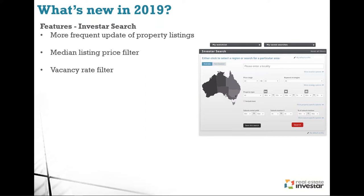Vacancy rate is a really exciting new filter. Whether you're renovating, buying and holding long term, or looking at high cash flow, finding a suburb with a low vacancy rate is much easier now. Generally 3% represents a balanced market — good demand, good stock available for rent. Anything lower is better. You can now say: only show me suburbs where the vacancy rate is 2% max.